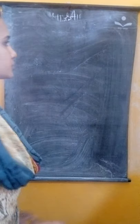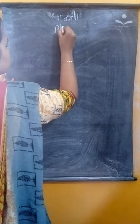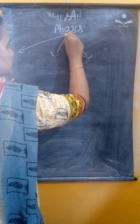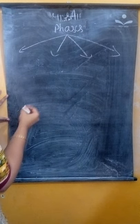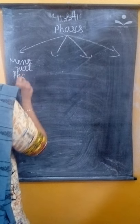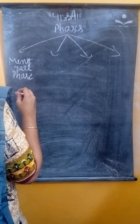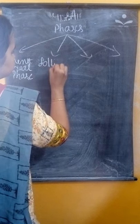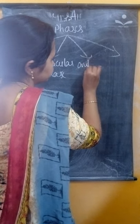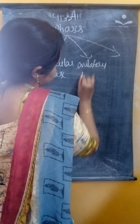Okay, today we will discuss the phases of the menstrual cycle. There are four phases. First is the menstrual phase, second is the follicular phase, ovulatory phase, and the last one is the luteal phase.